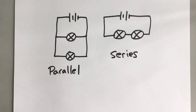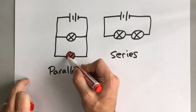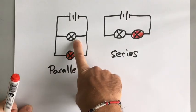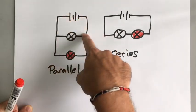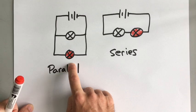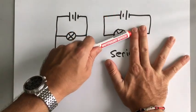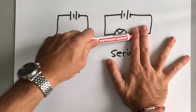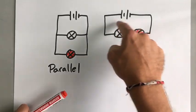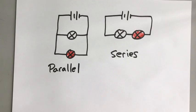If one bulb breaks in a parallel circuit, the other one stays on because there is still a complete circuit. However, in a series circuit, if one bulb breaks it creates a break in the circuit and there is no way for electrons to flow all the way around — so all of the bulbs switch off. In parallel, only the broken one switches off.